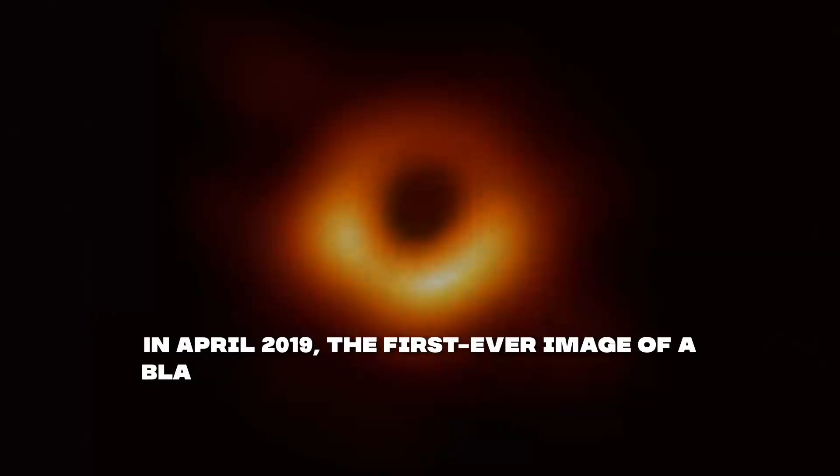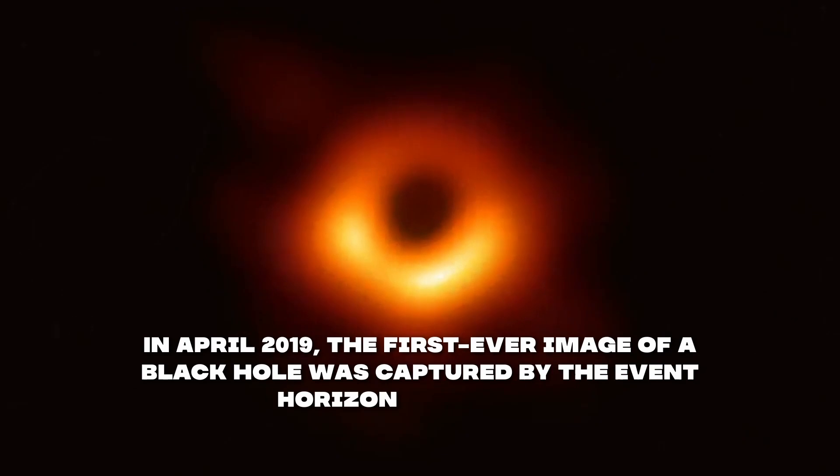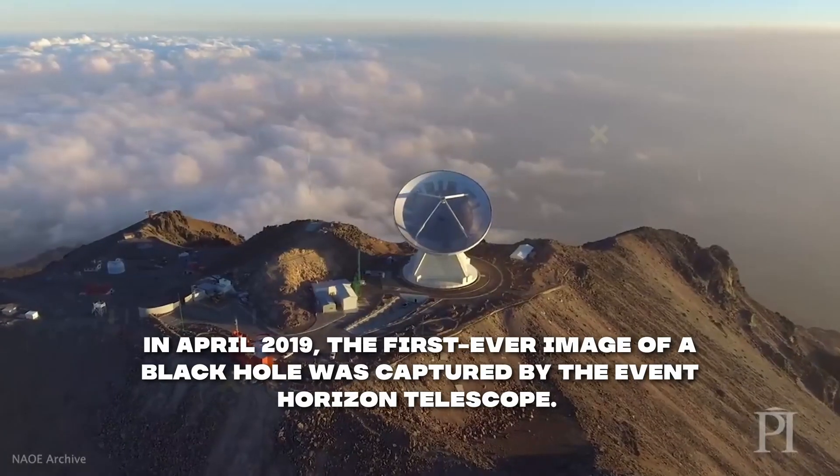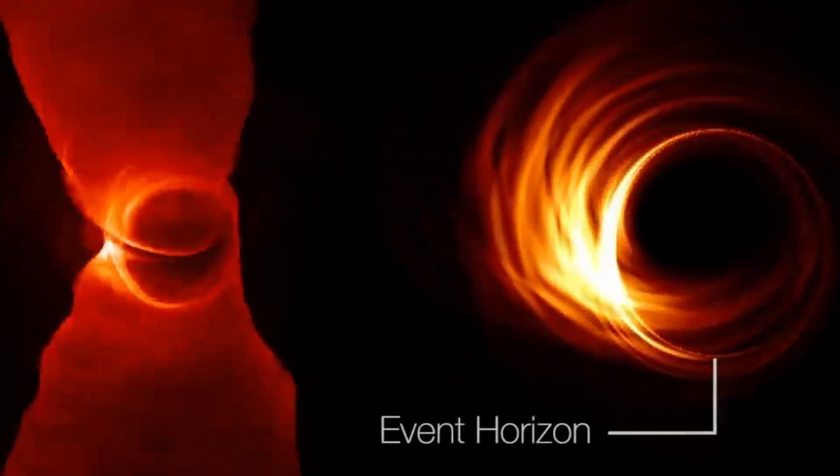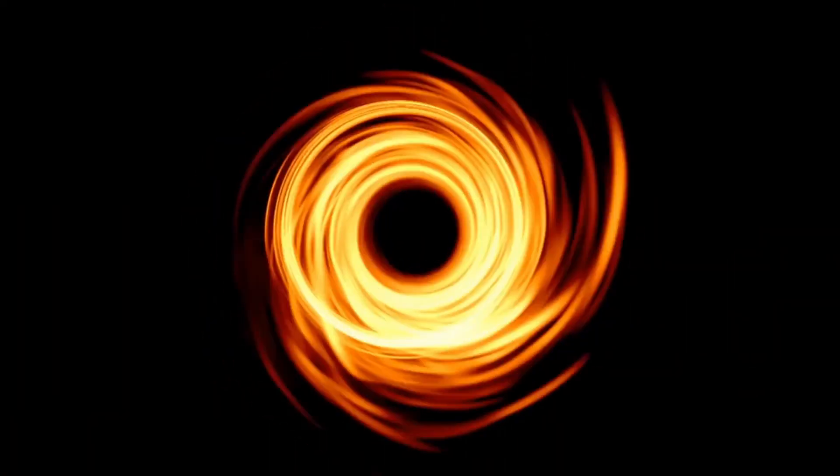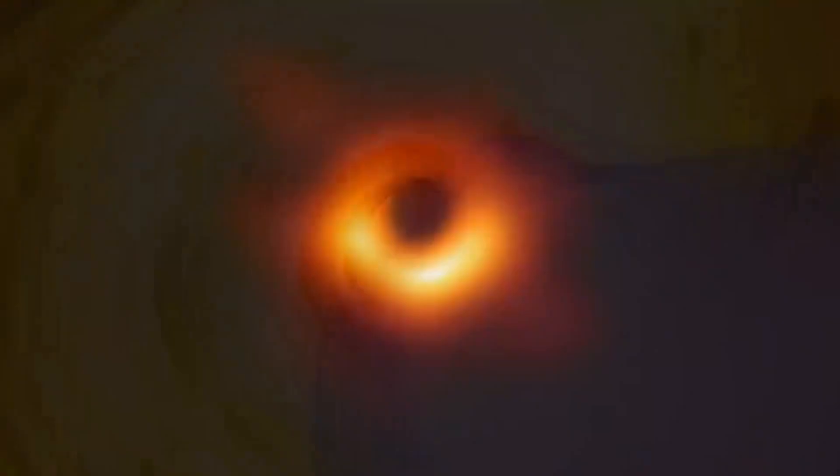In April 2019, the first ever image of a black hole was captured by the Event Horizon Telescope. The image shows the shadow of the black hole against the glowing ring of gas and dust. While the image does not show the event horizon directly, it provides strong evidence for the existence of black holes and their event horizons.